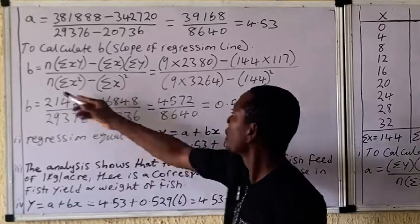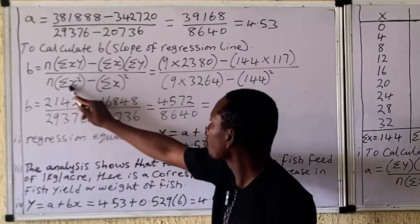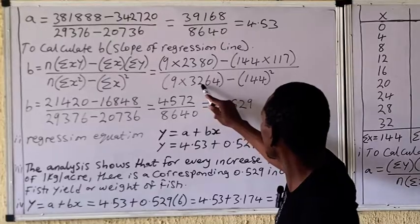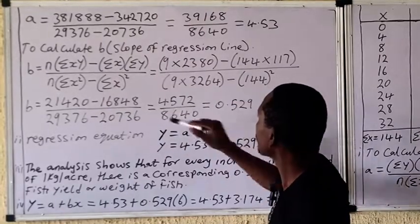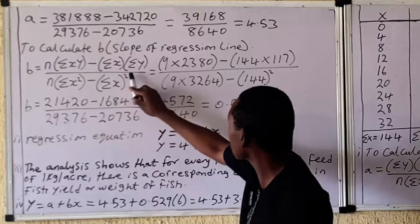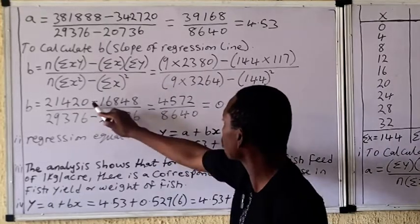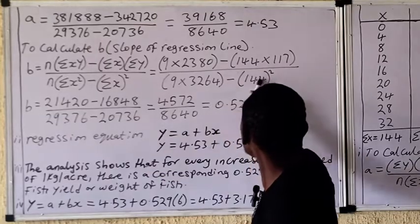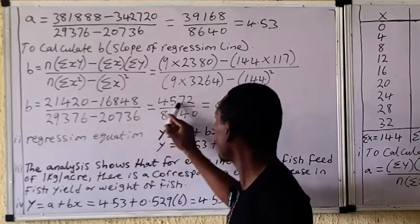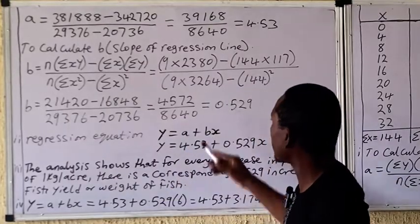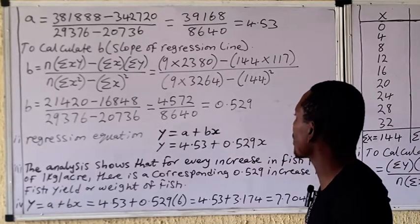Put your division sign. n is 9 as usual, times summation of x-squared, which is 2264 from the table. Put your subtraction sign, then summation of x squared — summation x placed inside and squared. Carry out the multiplication, then subtract to get the numerator and denominator values, carry out the division, and you have your slope, or b.